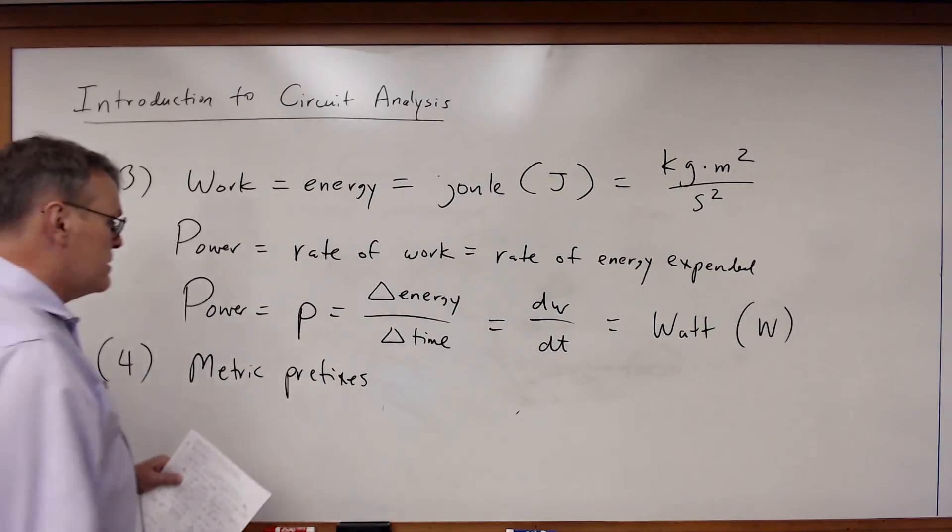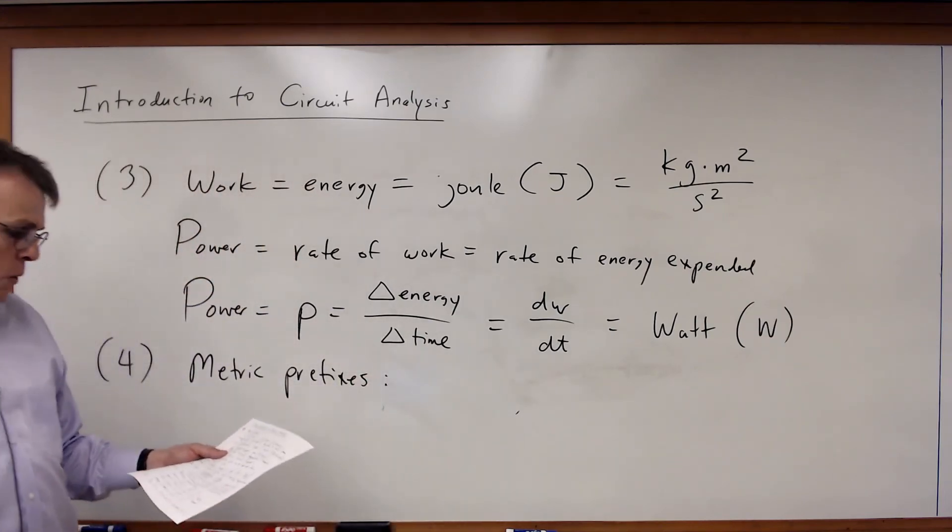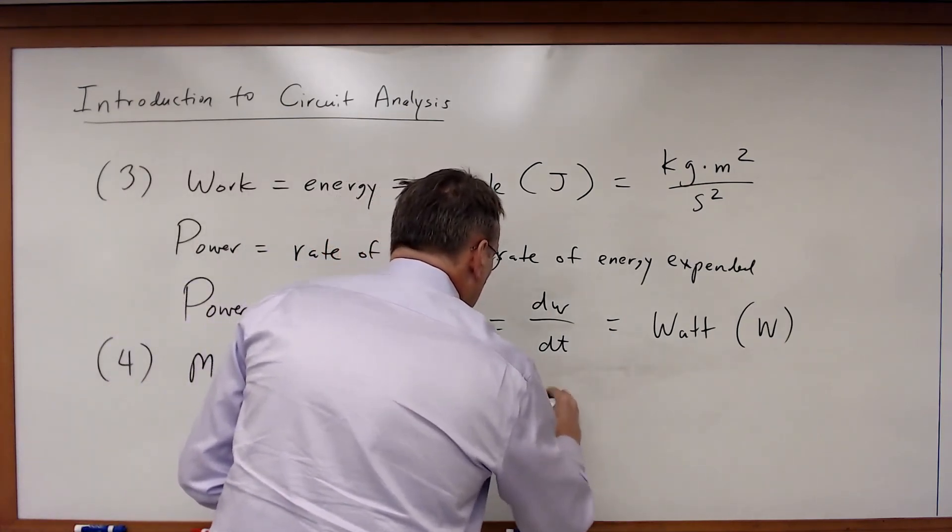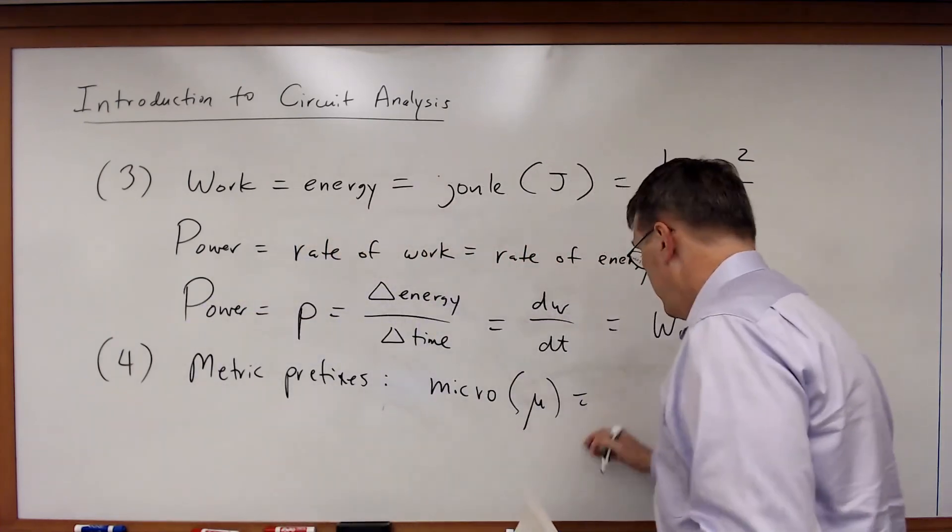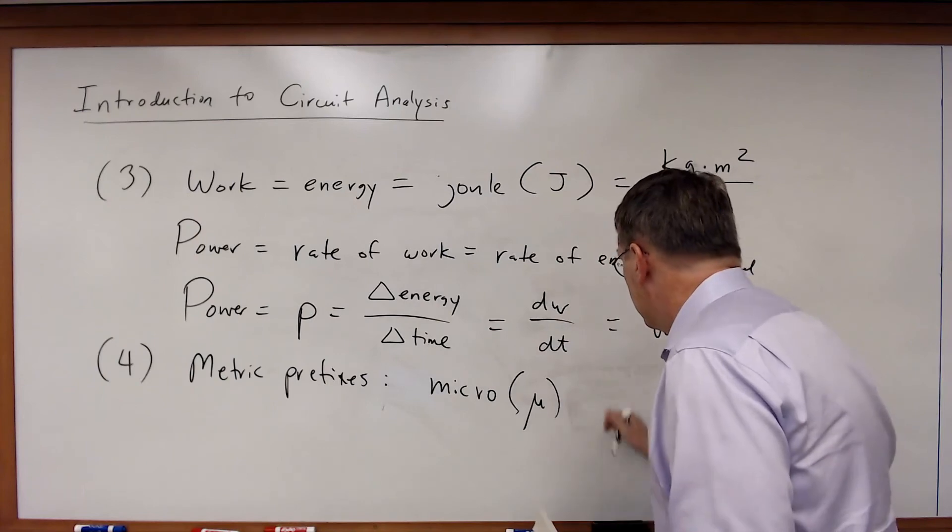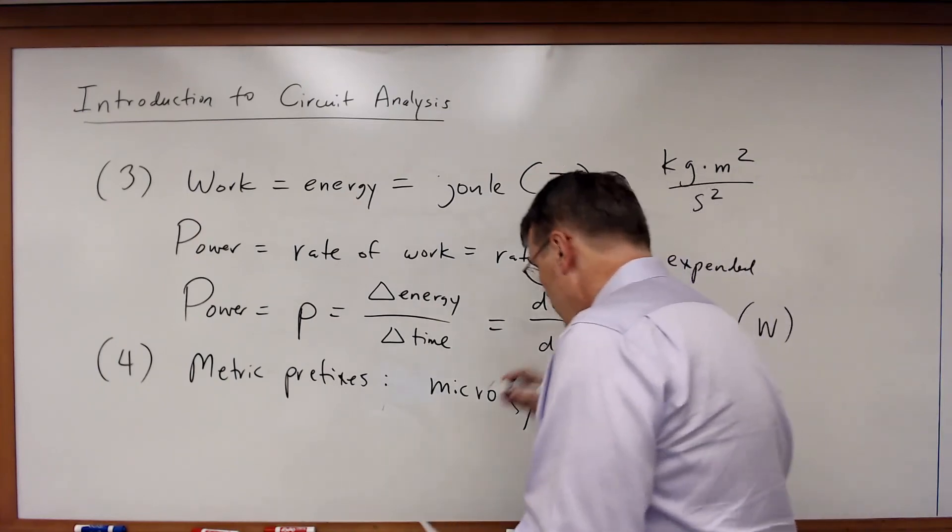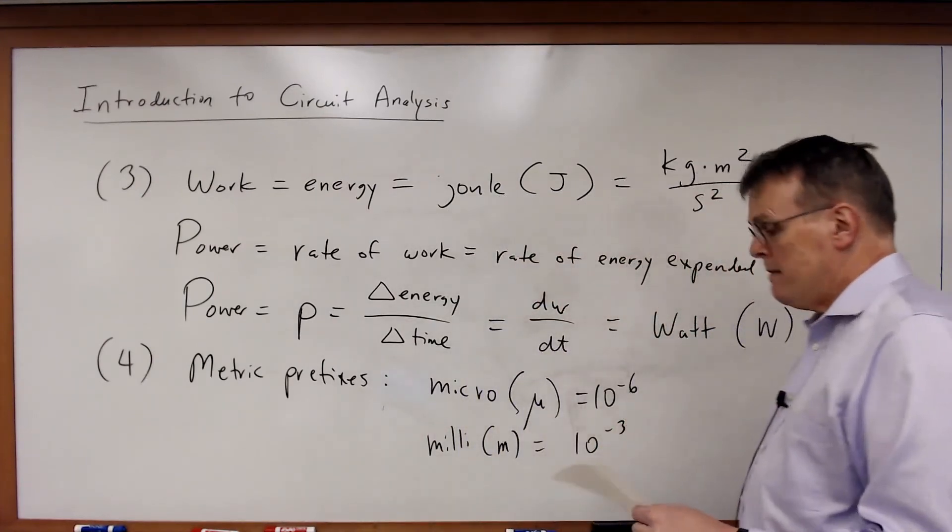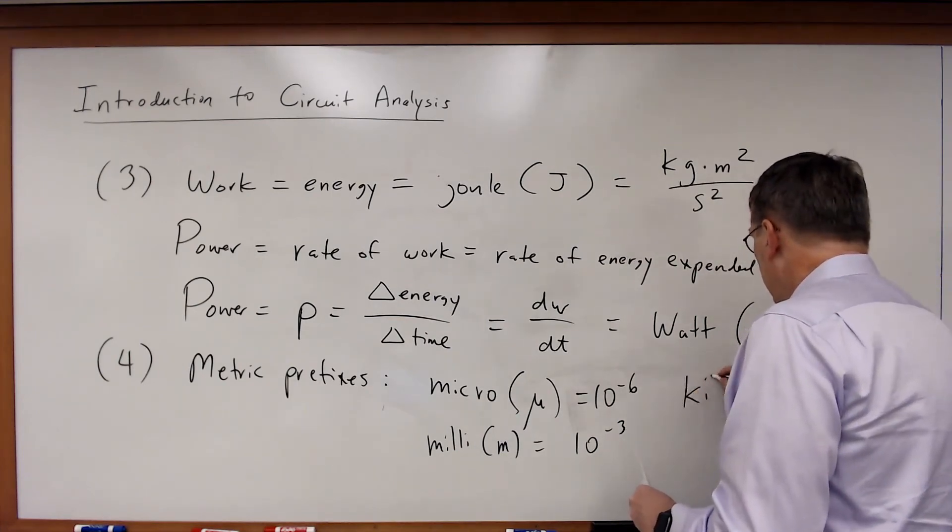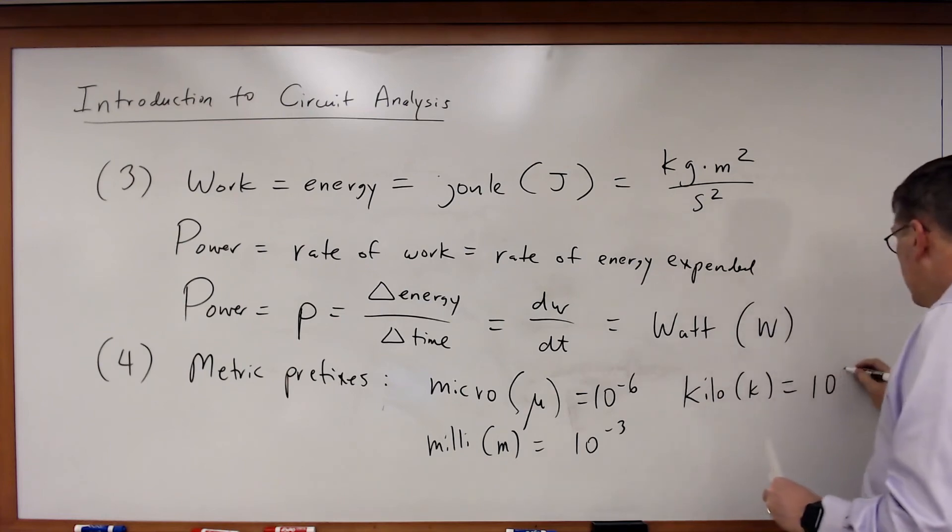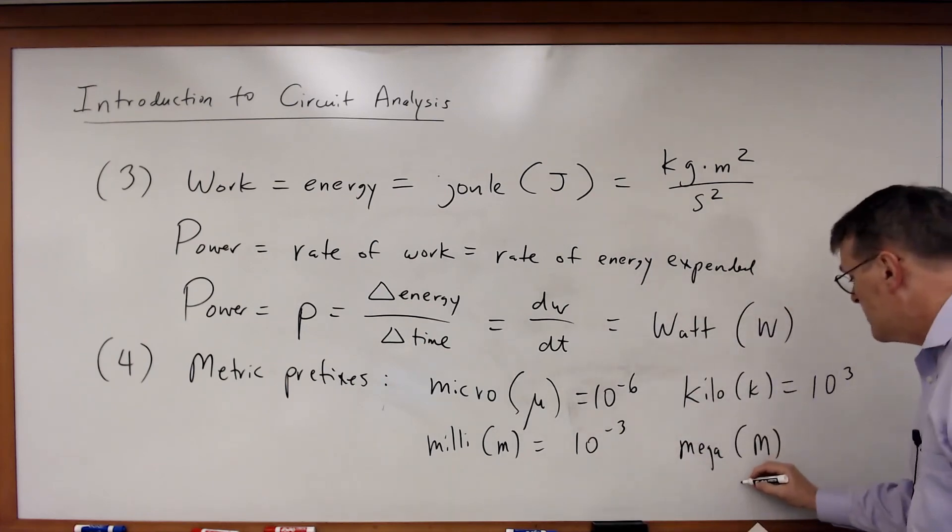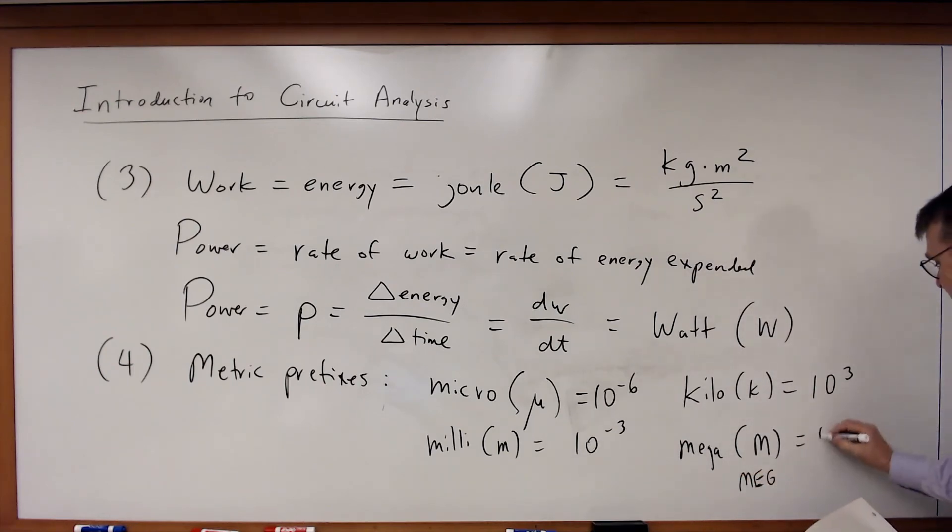And what are those prefixes? Well, some of the most common ones you're going to see in a basic circuits course will be, for example, micro, Greek letter mu, which is equal to 10 to the minus 6. Milli, small m, which is 10 to the minus 3. Kilo, k, 10 to the third. And mega, which is either capital M, or sometimes you'll see it just abbreviated as MEG, typed that way, which is 10 to the sixth.